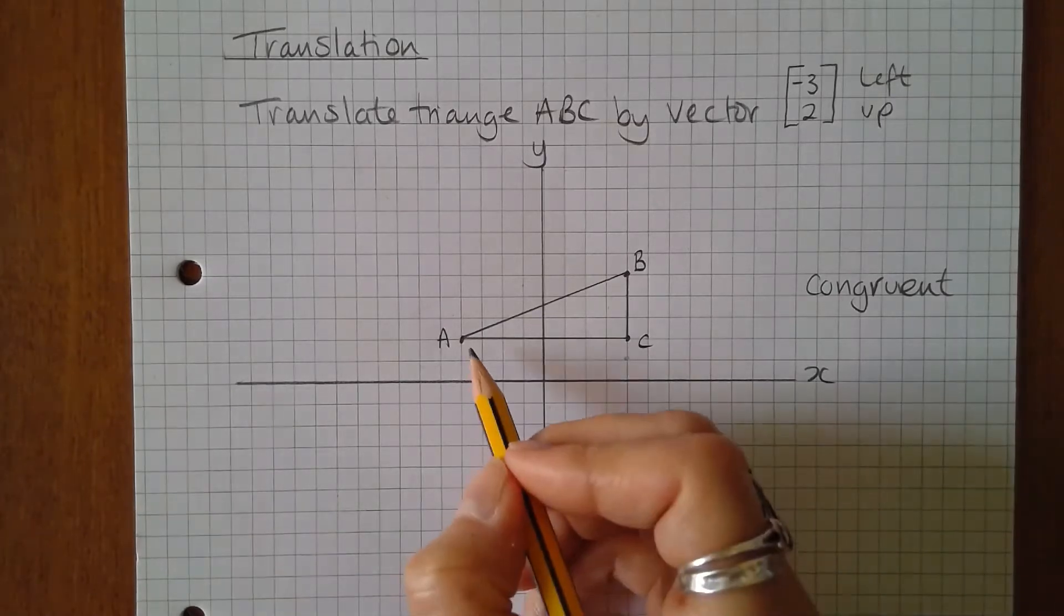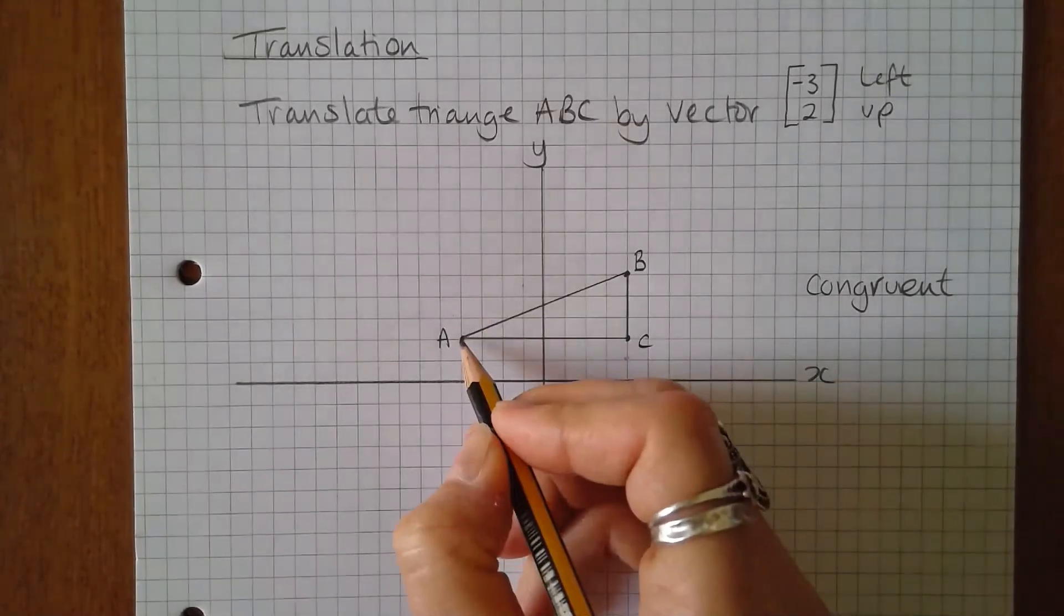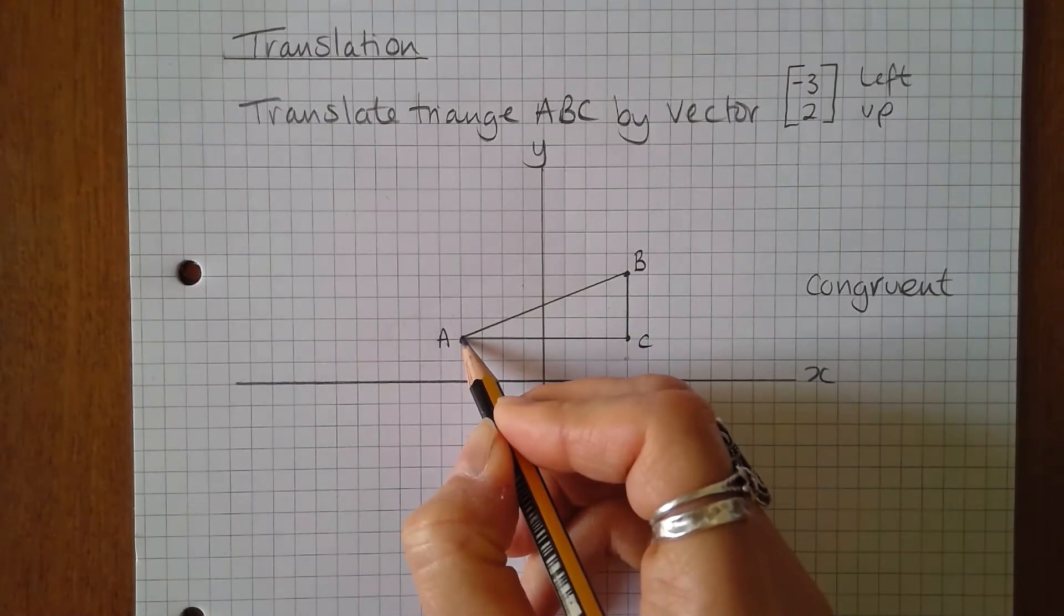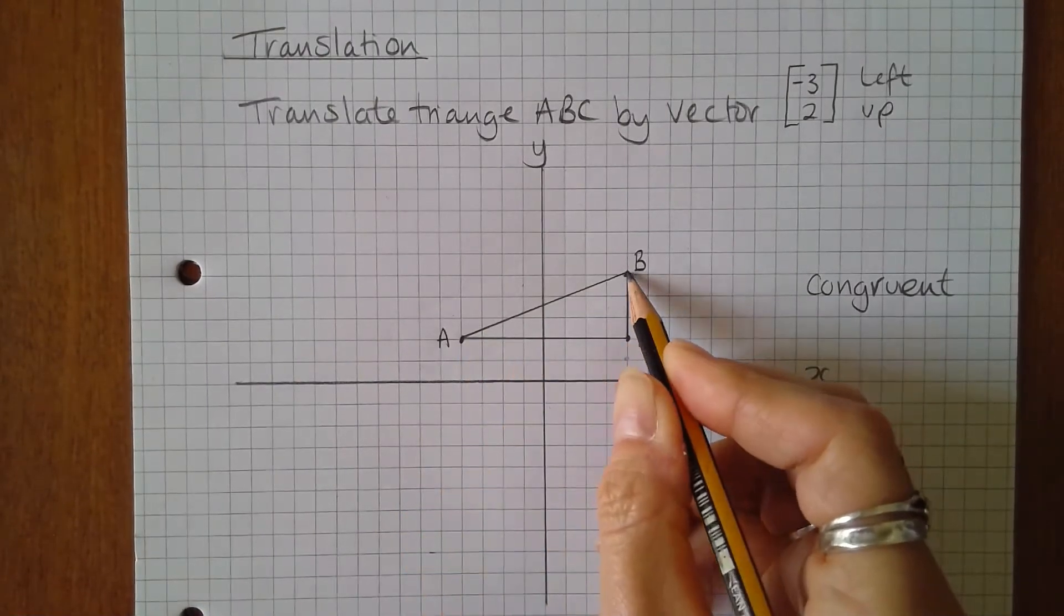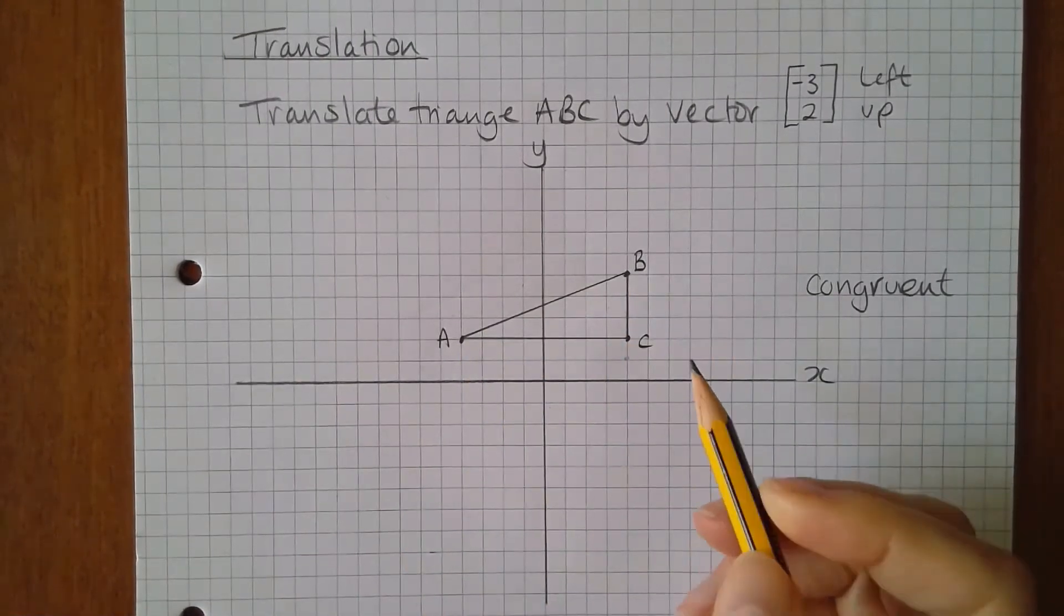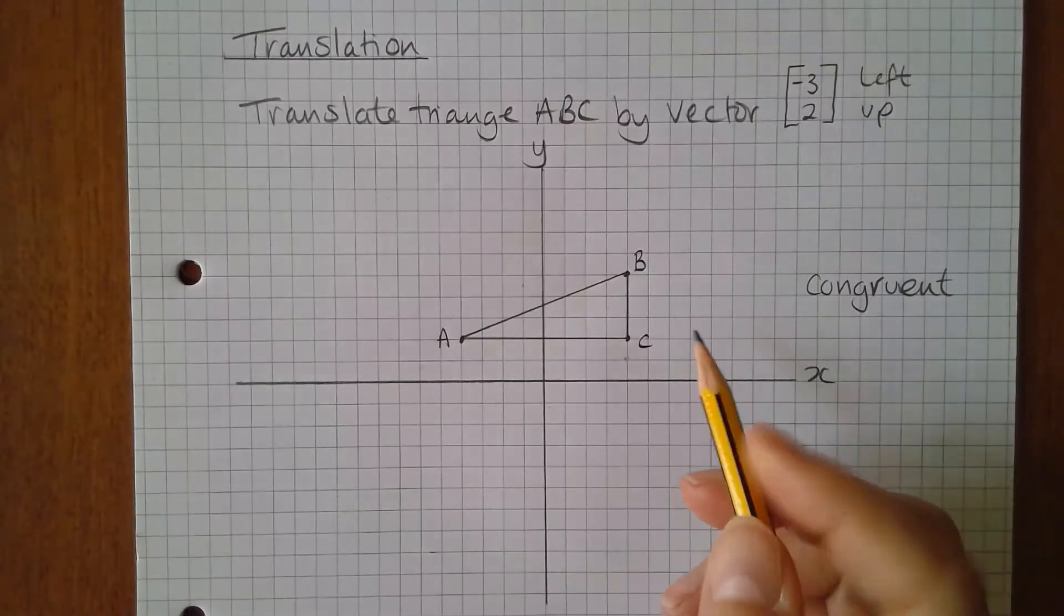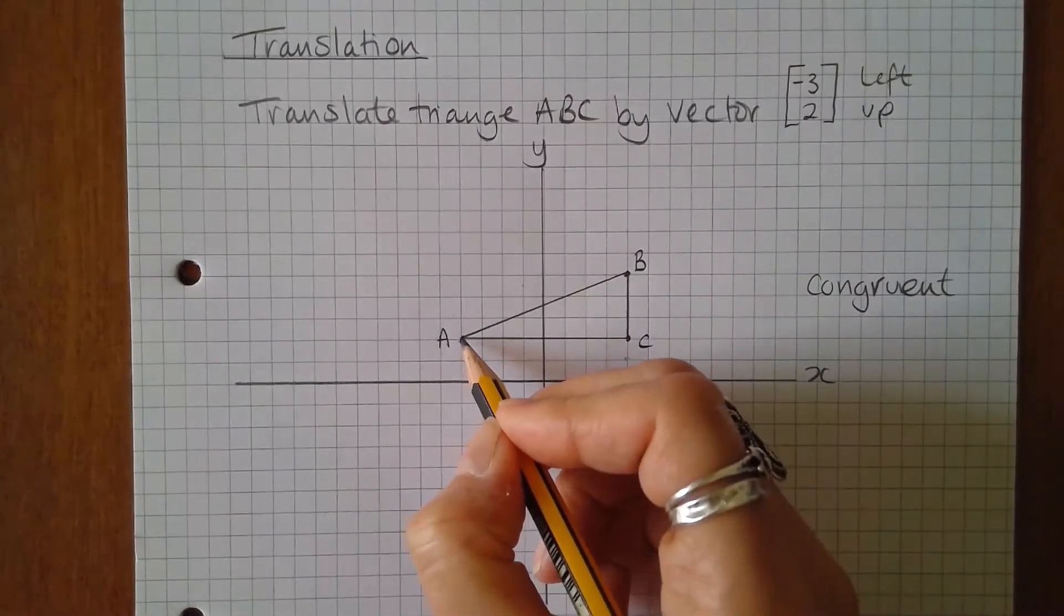So I'm going to translate this shape by translating each vertex separately. This way if I make a mistake when translating one of the vertices it will be obvious when the new shape is connected up.